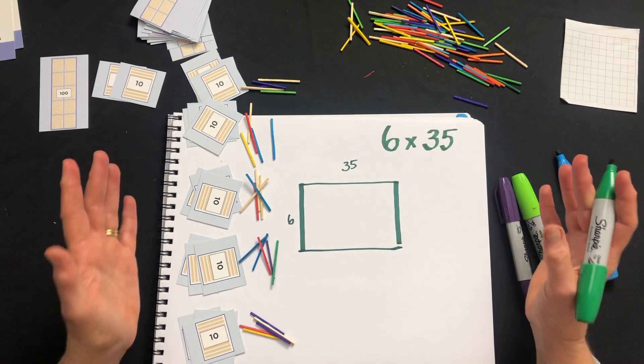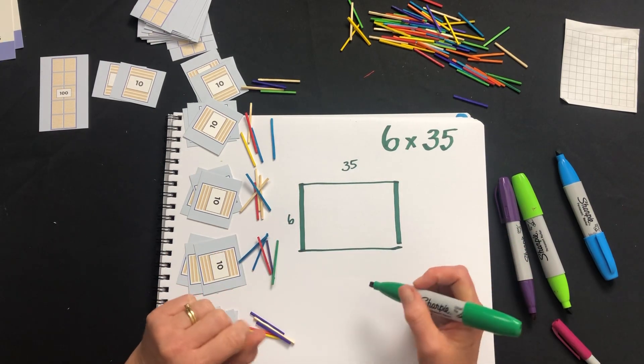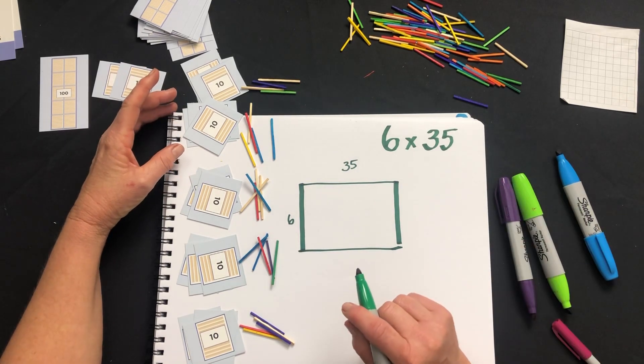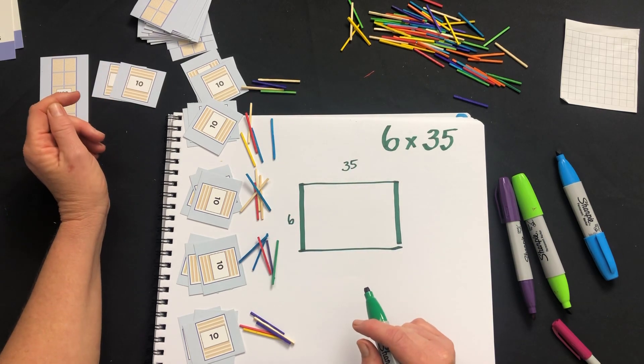Every multiplication can be represented using a rectangle. We either talk about multiplication when we're talking about groups where the amount per group is always the same, or we can talk about it in terms of arrays and rectangles.